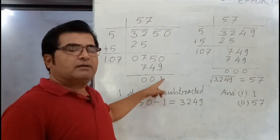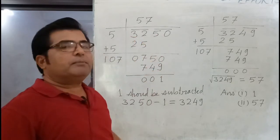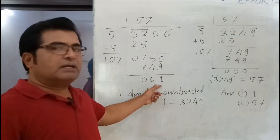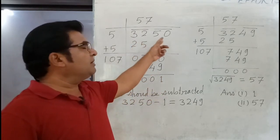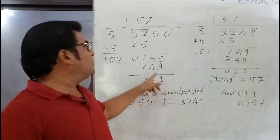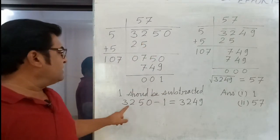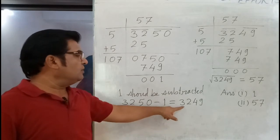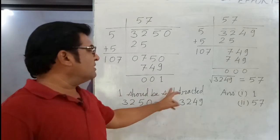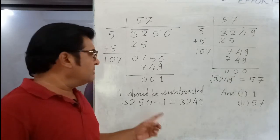When we find the square root of 3,250 by the division method, we get a remainder of 1. Since the remainder is 1, we know 3,250 is not a perfect square. So we subtract 1 from 3,250, which gives us 3,249.